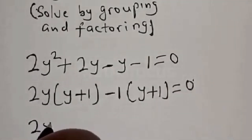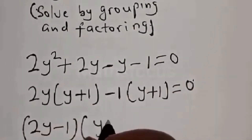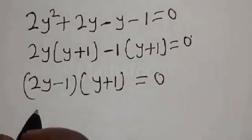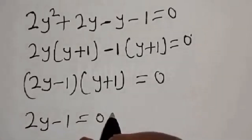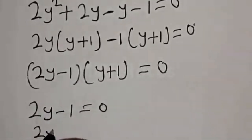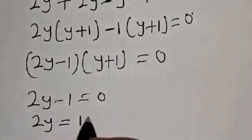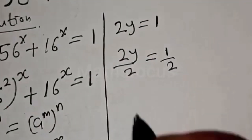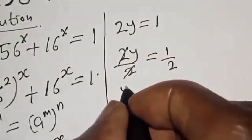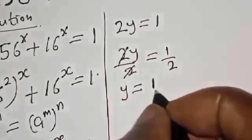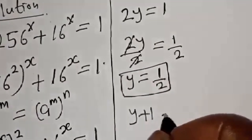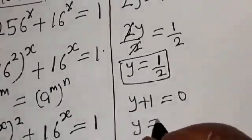We have 2y times (y plus 1) minus 1 times (y plus 1) is equal to 0, which gives (2y minus 1)(y plus 1) is equal to 0. So either 2y minus 1 equals 0, giving y equals 1 over 2, or y plus 1 equals 0, giving y equals minus 1.